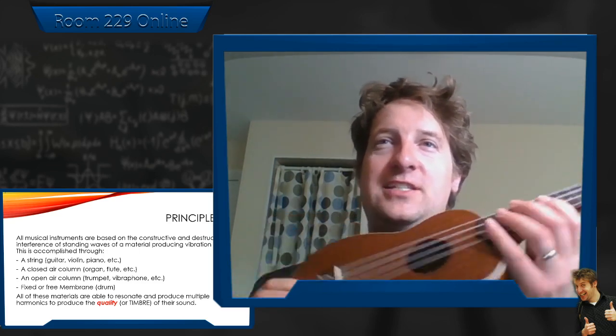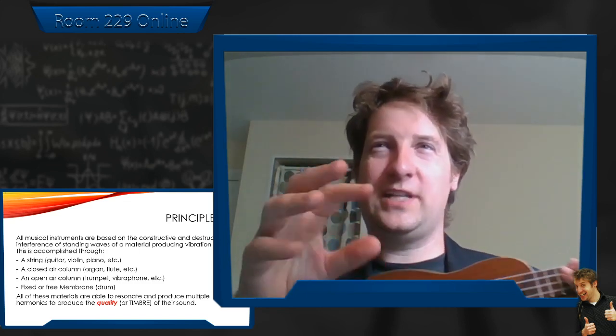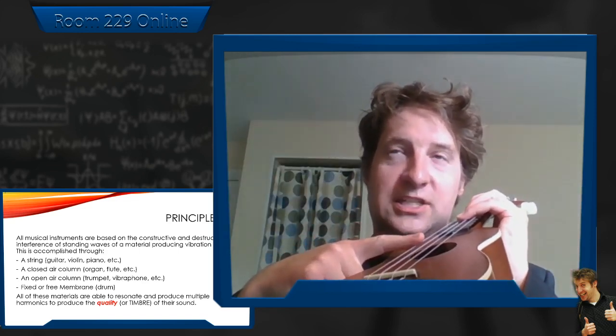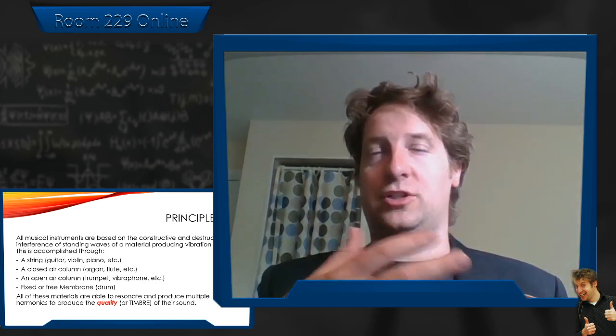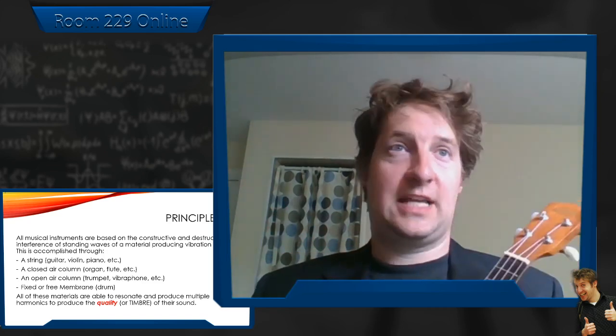A violin is the same thing, but there are no frets. Instead of plucking the violin, there's a bow being used that causes vibrations — it's horse hair with resin on it, and as it rubs against the strings it sort of skips across them, producing a vibration in the string. Again, the length and tension on the string define the note, and the box that the violin is made out of resonates and produces the sound.